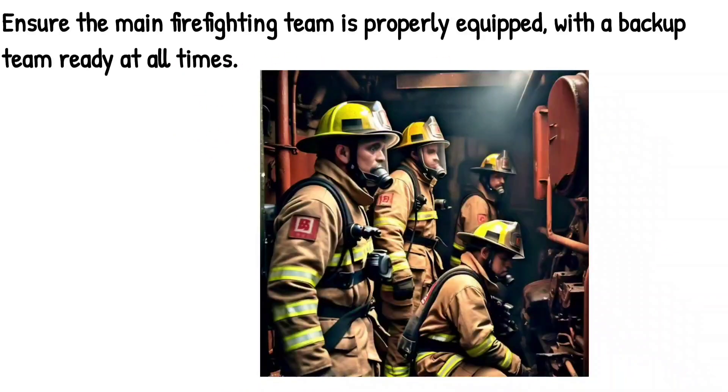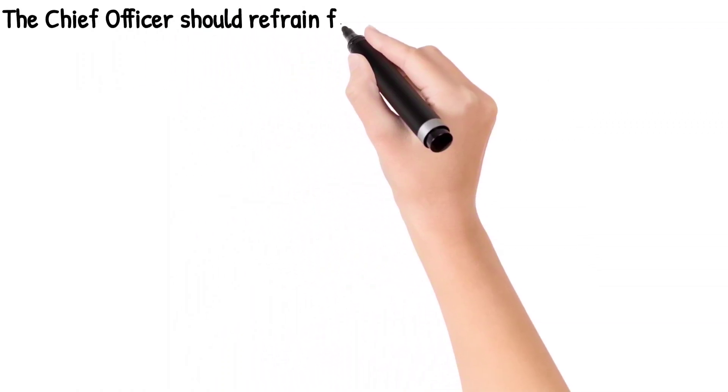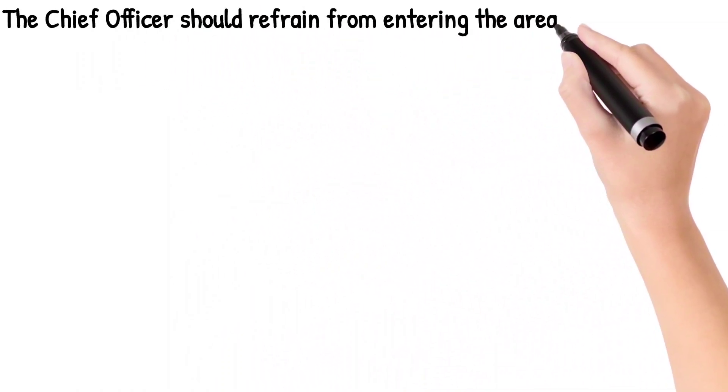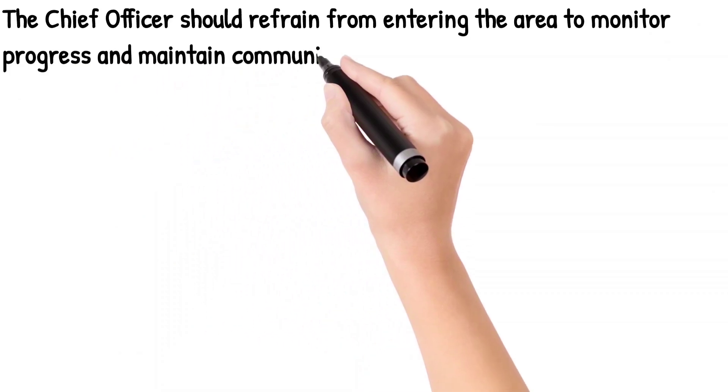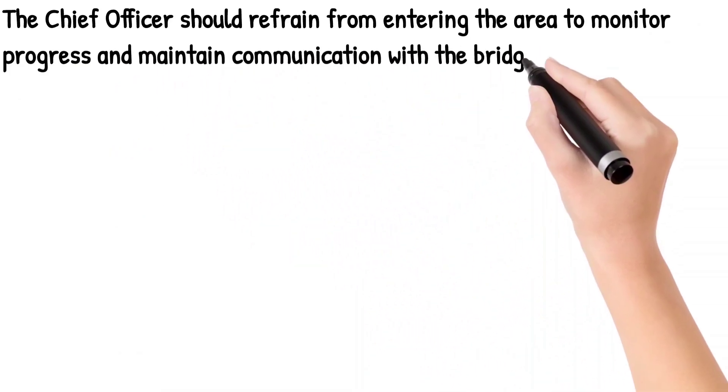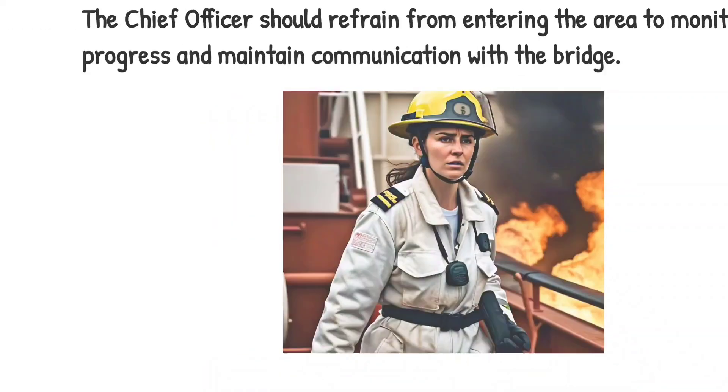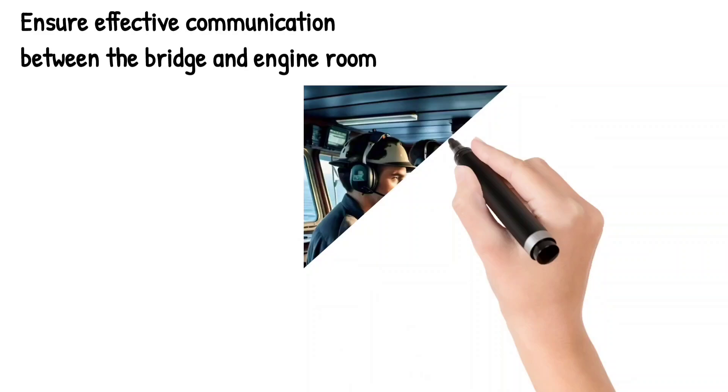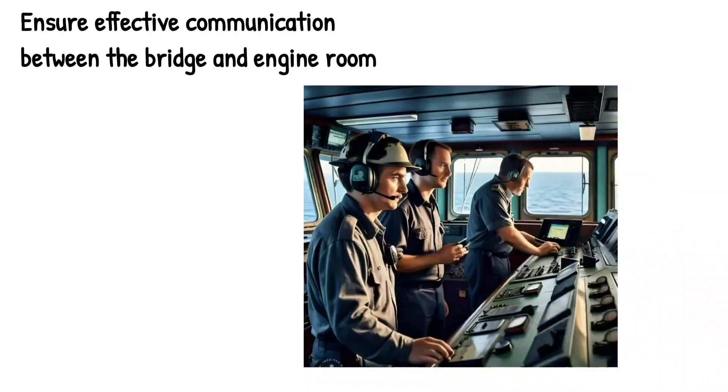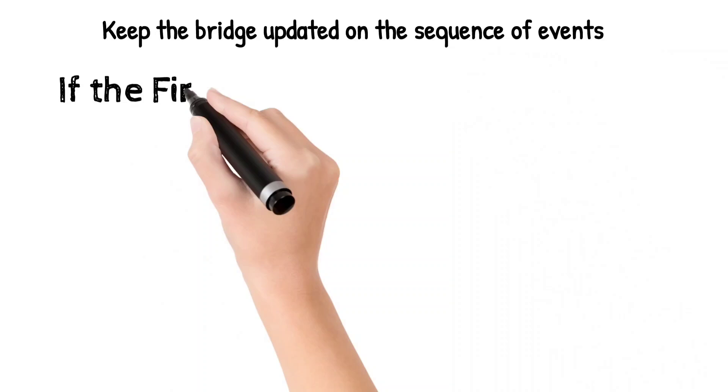The chief officer should not enter the area but monitor the progress and maintain communication with the bridge. So the chief officer should be the link for communication with the bridge. We need to ensure effective communication between bridge and engine room. Keep the bridge updated of all the sequence of events.